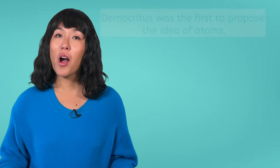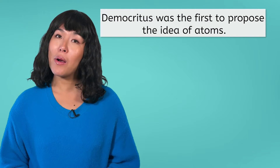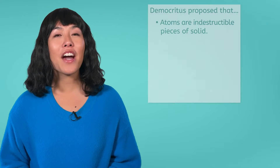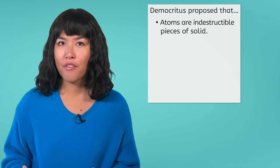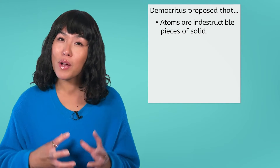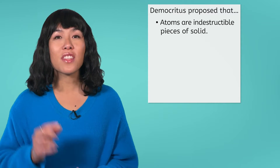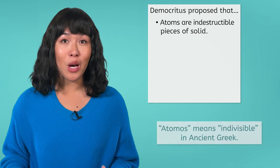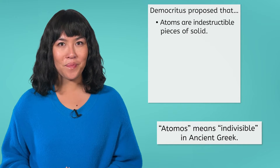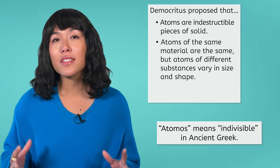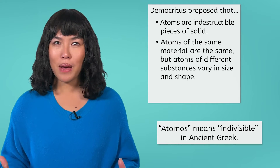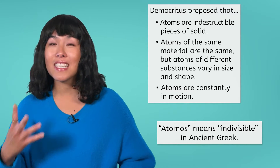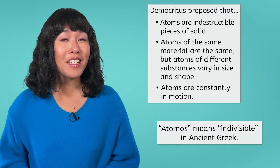What do these two scientists have to do with atomic theory? Well, Democritus was actually the first philosopher and scientist to propose the idea of atoms. He said that atoms are indestructible pieces of solid. He came to this theory because he realized that if you break a stone in half, both halves have the same properties. Then he said if you keep breaking halves in half, eventually you will reach the tiniest piece, which he called an atomos, which means indivisible in Greek. Finally, Democritus theorized that atoms of the same material are the same, but that atoms of different substances vary in size and shape, as well as the idea that atoms are constantly in motion. Democritus was definitely onto something.